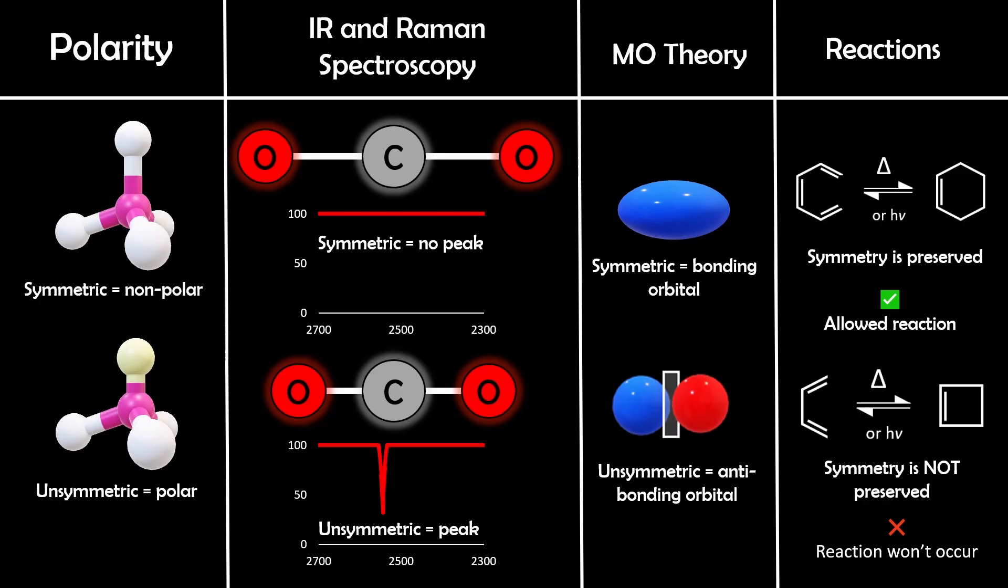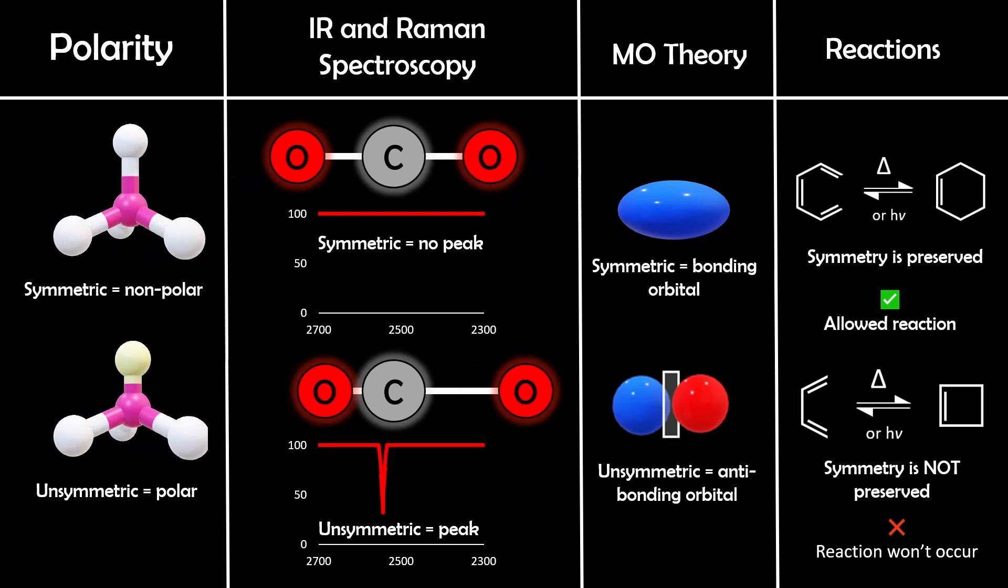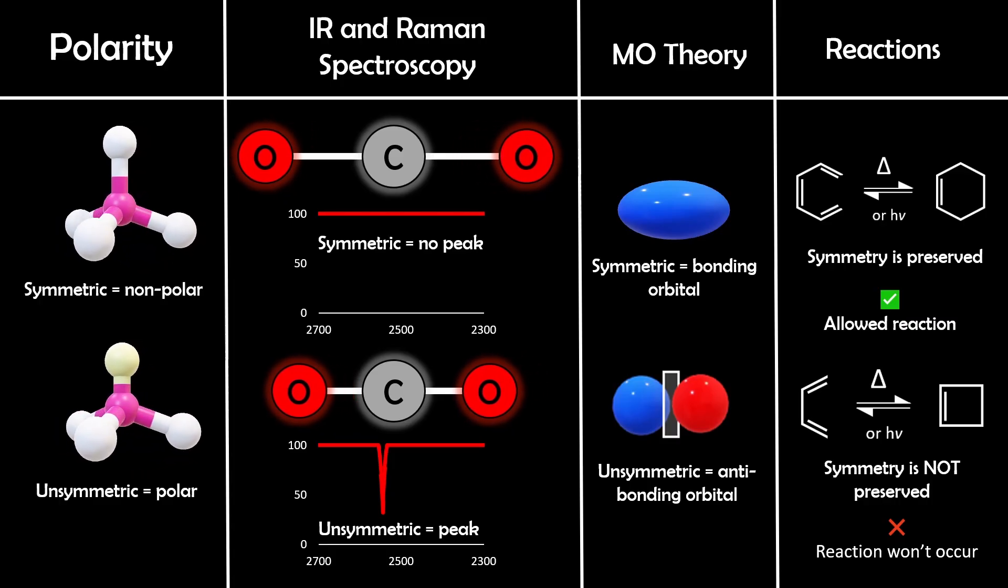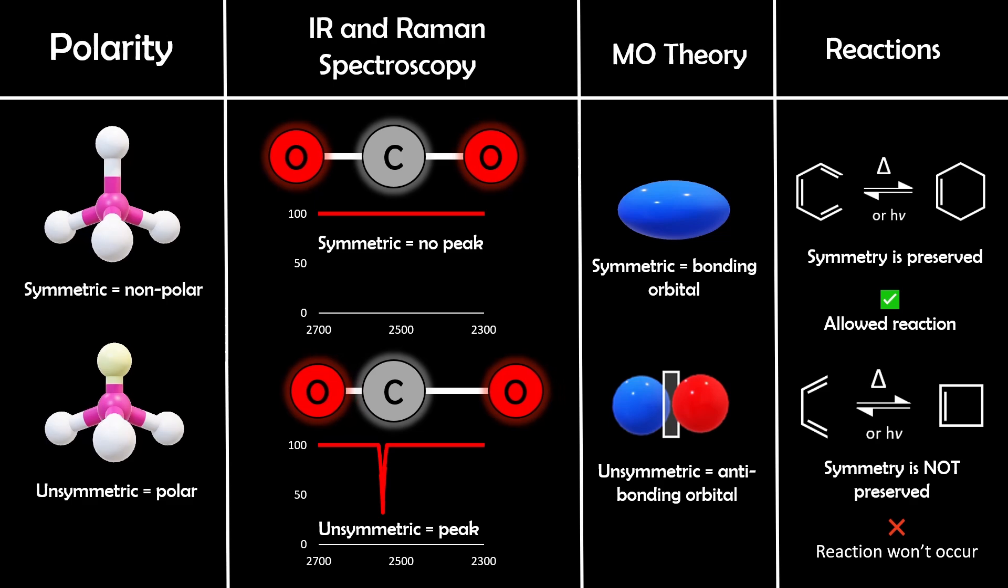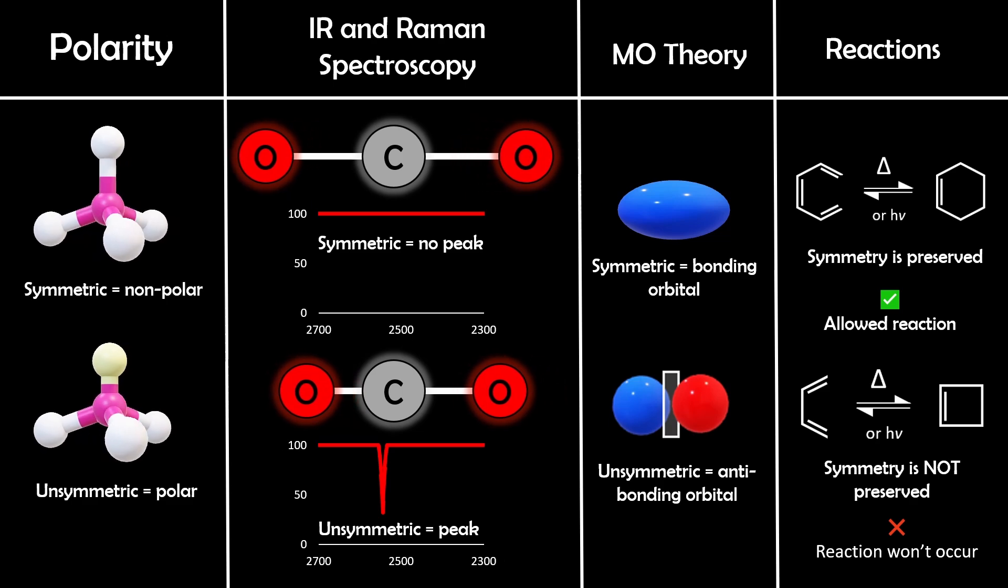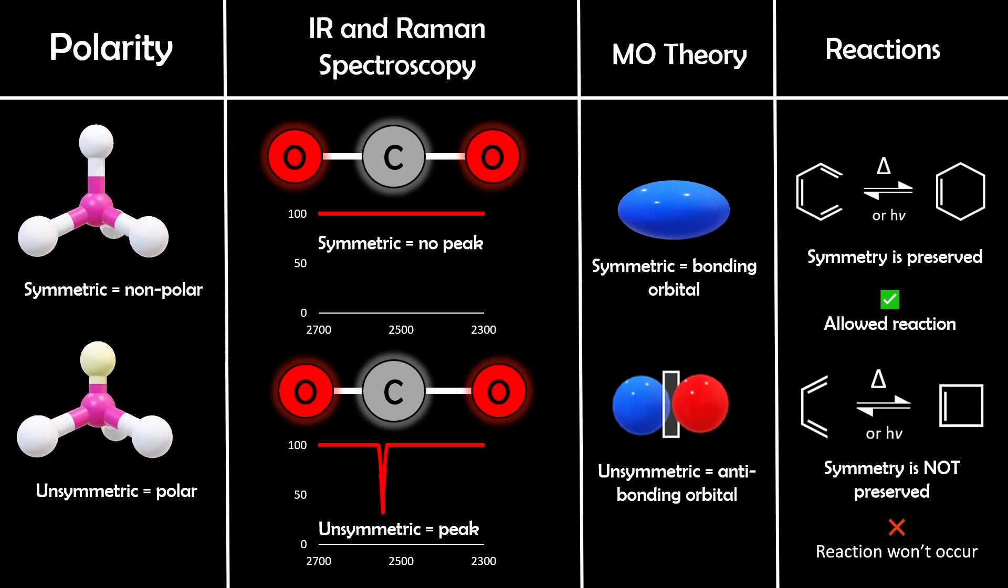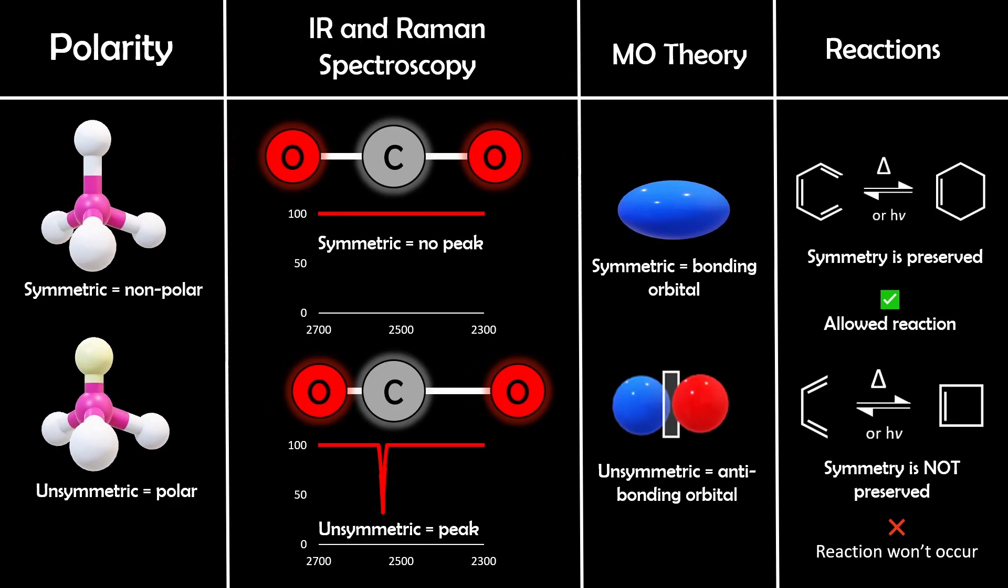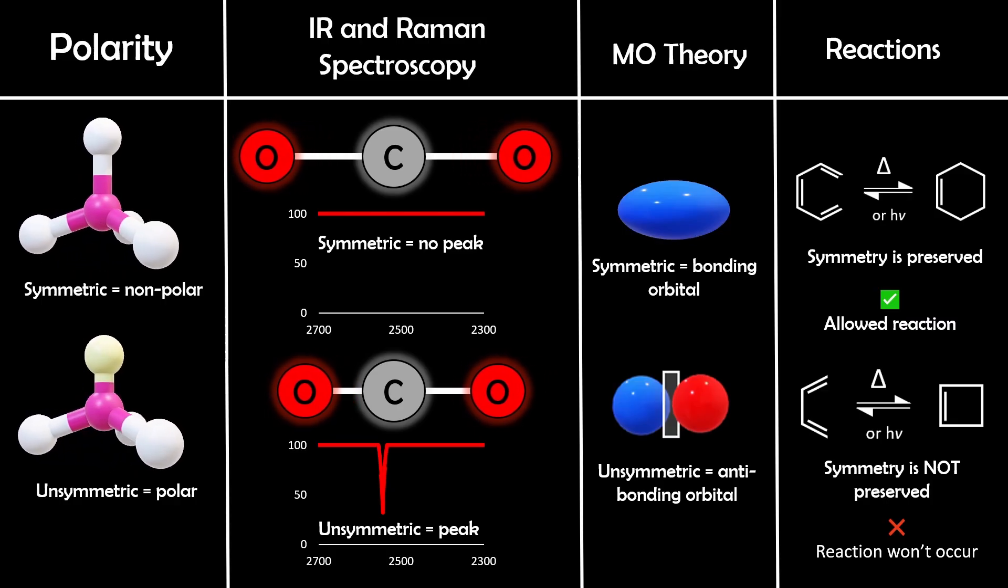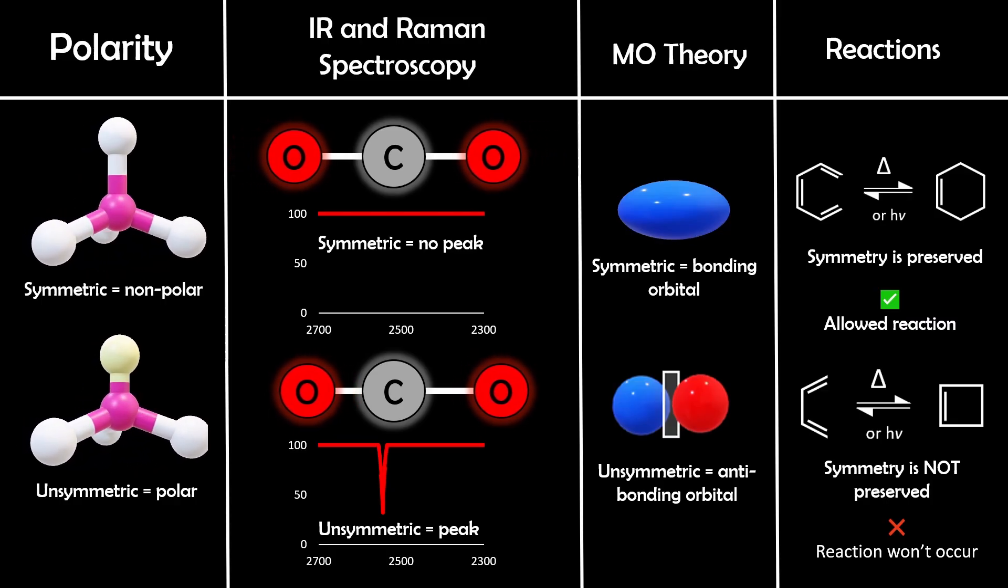And that's why symmetry matters in chemistry. It helps us predict many things, like whether molecules are polar or nonpolar, which vibrations will show up in IR or Raman graphs, how atomic orbitals combine in molecular orbital theory, which reactions are allowed or forbidden, and many more.